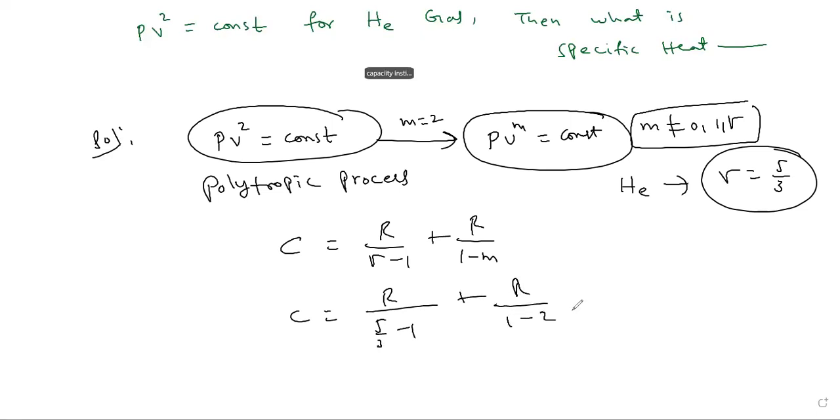This becomes 5 by 3 minus 1 equals 2 by 3, so 3R by 2 plus R by minus 1, which is R by minus 1 times minus 1 equals R. So we have 3R minus 2R, which is R by 2. For PV² constant relation, this specific heat is R by 2.